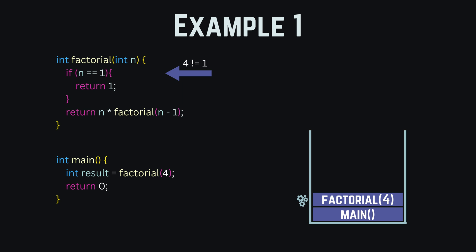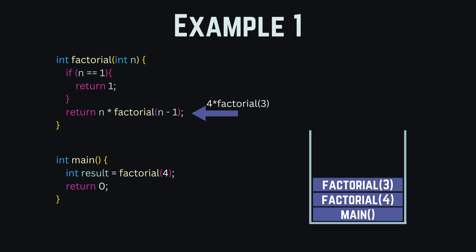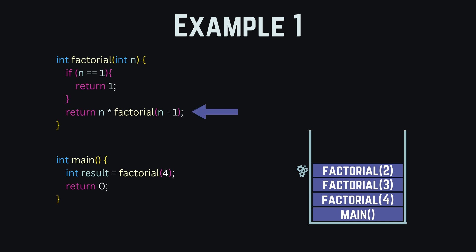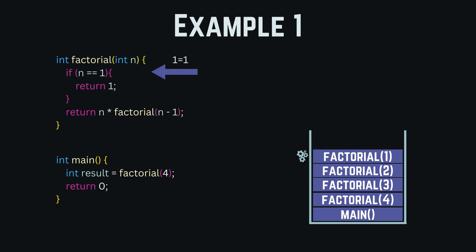Factorial(4) is now getting processed. We see 4 does not equal 1, so we go to our recursive case and calculate 4 times factorial(3). Factorial(3) is put on the call stack and gets processed while factorial(4) is paused. We check if 3 equals 1 — it does not — so we go to our recursive call and return 3 times factorial(2). Again factorial(2) comes on top and gets processed. 2 does not equal 1, so we return 2 times factorial(1). Factorial(1) is now on top of the stack. We check if 1 equals 1 — finally it does — we've reached our stopping condition, and we return 1. Our recursion will finally stop calling more functions.